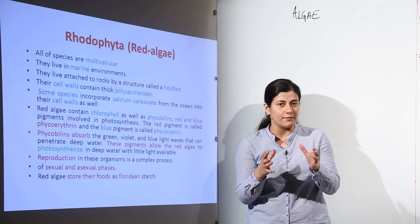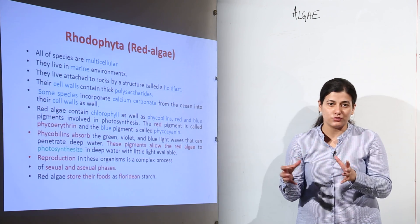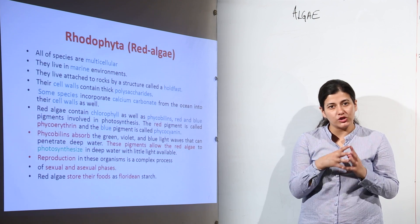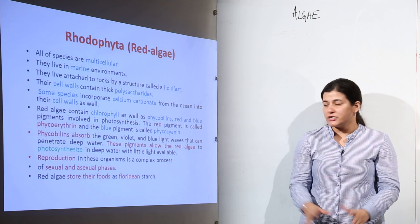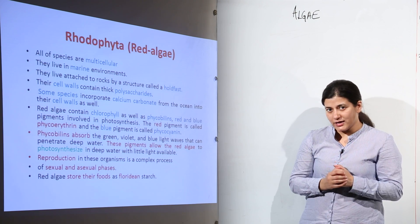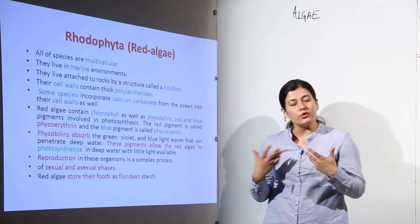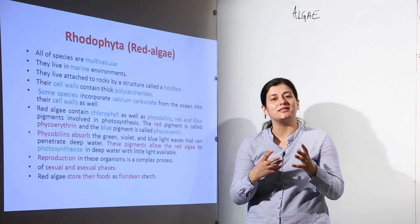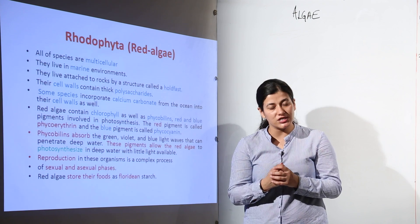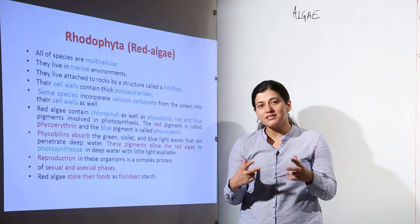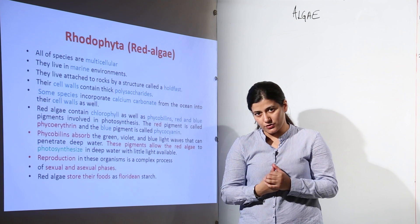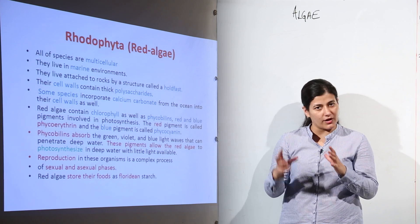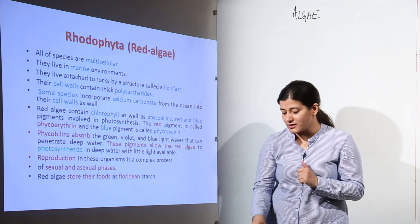In oogamous sexual reproduction, the female gamete is larger in size and the male gamete is motile, reaching the female gamete. This is all about algae, and you have to understand the basic differences on which classification is made — the highlighted points you must remember by heart.